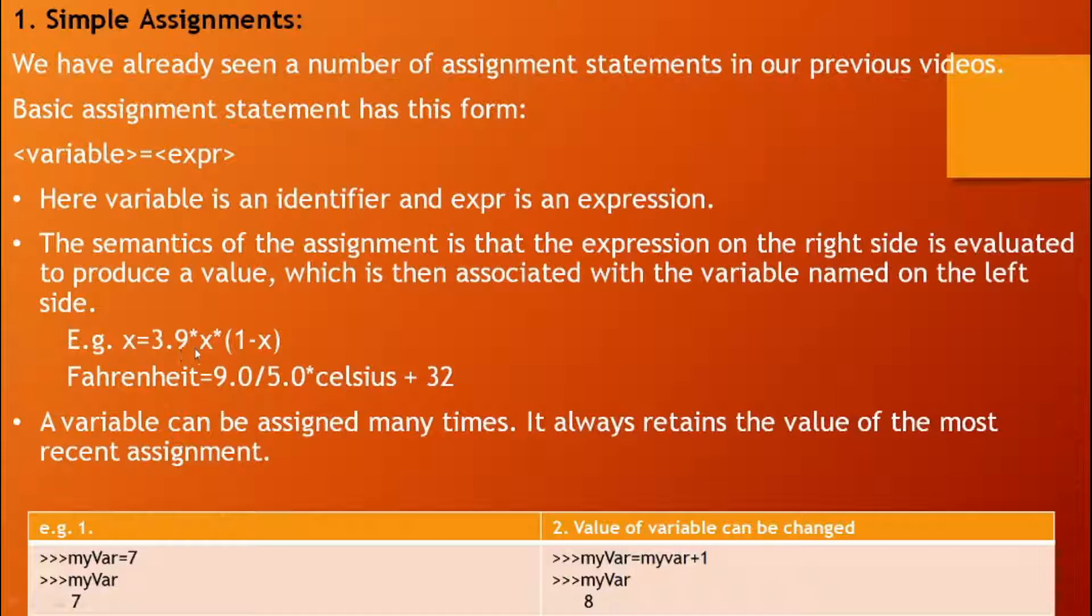The semantics, the meaning of the assignment, is that the expression on the right side is evaluated to produce a value which is then associated with the variable named on the left side. Here we are getting the Fahrenheit value by evaluating this expression. A variable can be assigned many times. It always retains the value of the most recent assignment.